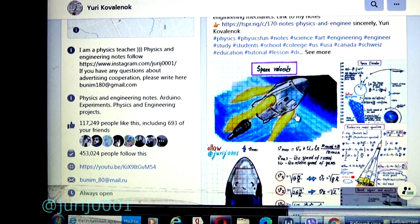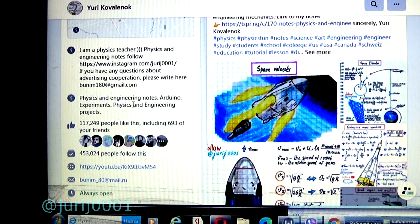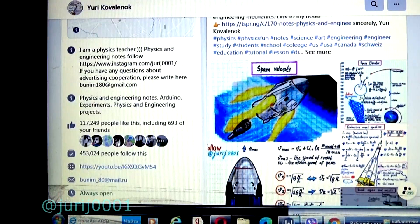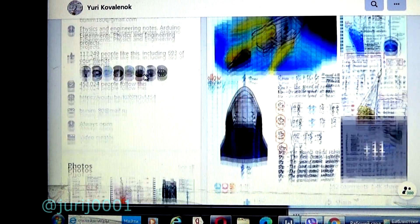Scammers use my photos, email, and Instagram to mislead you. If you go to my Instagram, you will see completely different photos. This is my Instagram, friends. Unsubscribe from the scammers and come to me. Links can be found in the description of this video. Sincerely, Yuri Kovalenok.